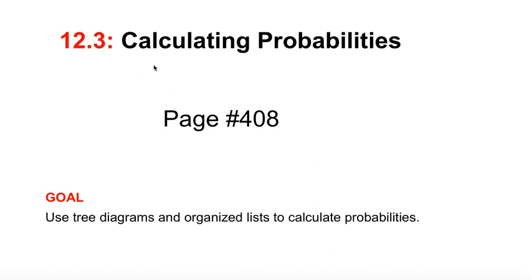Hello, grade eights, and welcome to Lesson 12.3, Calculating Probabilities. It is found on page 408 of your textbook. And the goal — which you are to write down right now — is to use tree diagrams and organized lists to calculate probabilities.